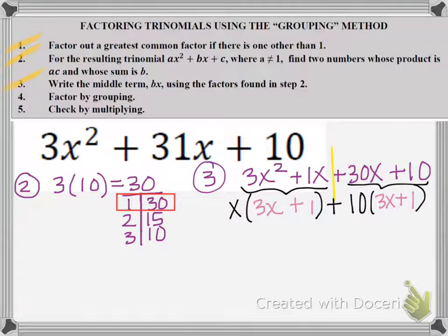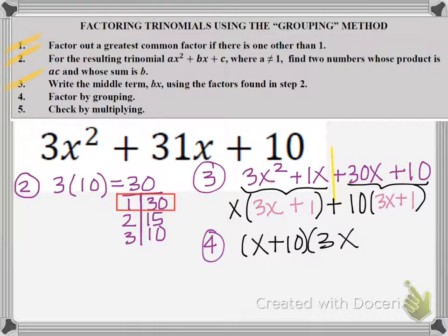So this is where I look at the problem and I know that I'm on the right path because my two binomials match, 3x plus 1 and 3x plus 1. So now I'm able to finish step 4. I take the x plus 10 and I form one binomial, and then the matching binomial is 3x plus 1. That becomes my other binomial.